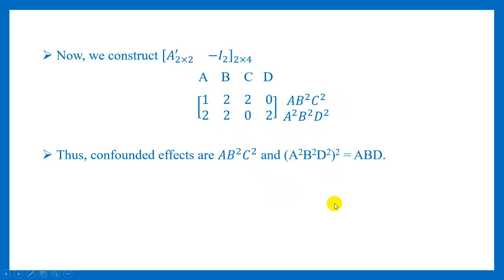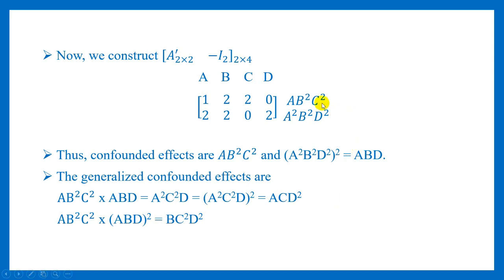We know that this matrix [A' | -I] gives us our confounded effects. So our confounded effects are AB²C² and A²B²D². The generalized confounded effects — calling these P and Q — are PQ and PQ². That gives us AB²C² × A²B²D² (squaring the second to get ABD by convention), so we multiply AB²C² with ABD and AB²C² with (ABD)². The two other generalized confounded effects are ACD² and BC²D².